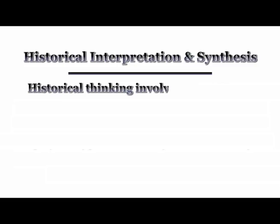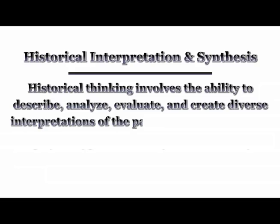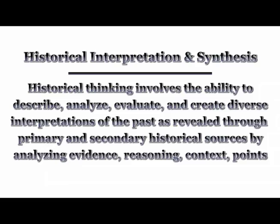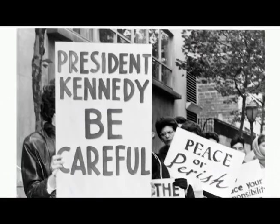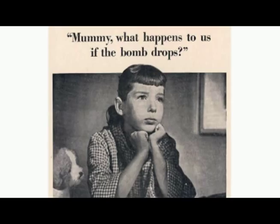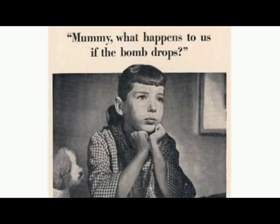Historical thinking involves the ability to describe, analyze, evaluate, and create diverse interpretations of the past, as revealed through primary and secondary historical sources, by analyzing evidence, reasoning, context, points of view, and frames of reference. People will look at the past through their own lens. Let's look at the Cuban Missile Crisis as an example: the U.S. saw Soviet missile installations in Cuba only 90 miles from Florida, pointing at major U.S. cities, and believed this to be a distinct threat. But the Soviets viewed the U.S. missile installations in Turkey as an equal threat to the one in Cuba, while the U.S. was certainly fine with that.